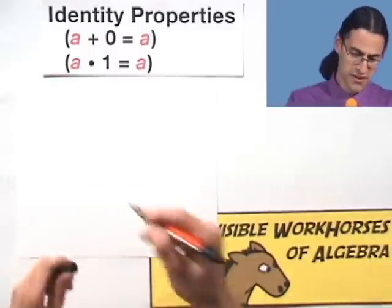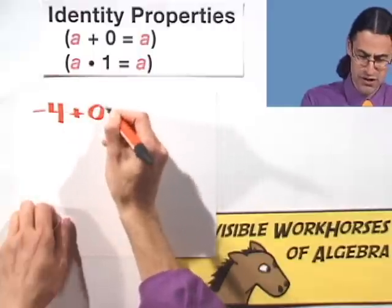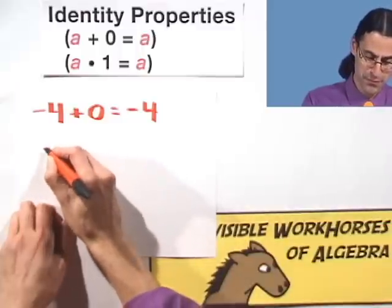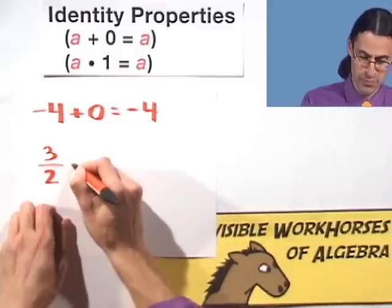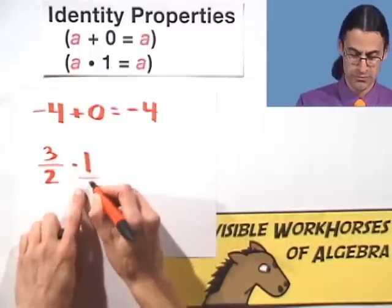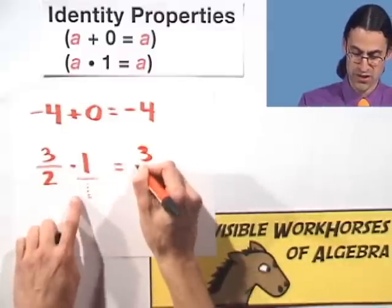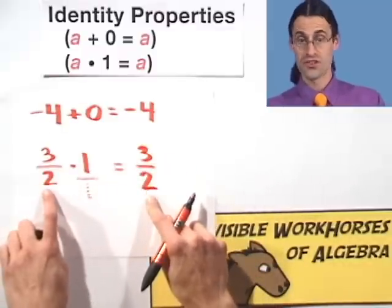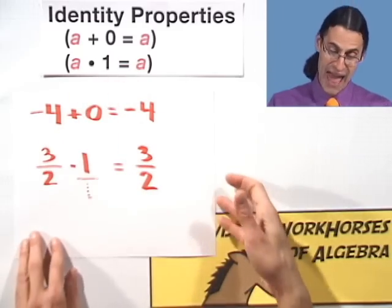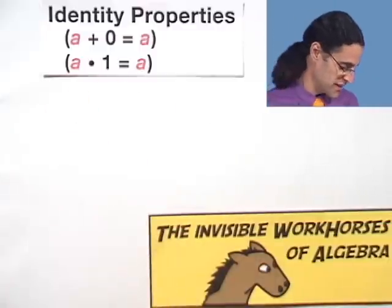There are all kinds of examples that you can think about. I'll just do a couple just for fun. For example, if you take negative four and add zero, notice that we get negative four. Similarly, if you take three halves and multiply it by one, technically that's actually one with an invisible one there. Three times one is three, two times one is two, and we get back our three halves. You can see one is the multiplicative identity, zero is the additive identity.